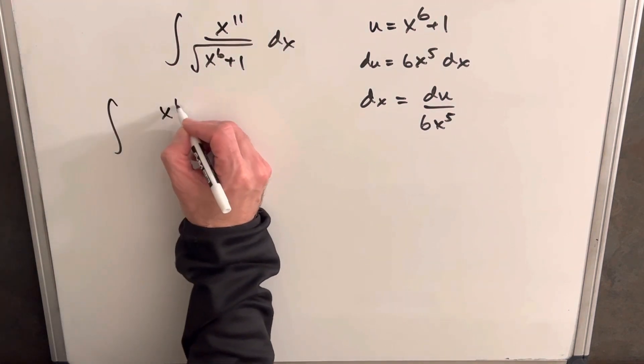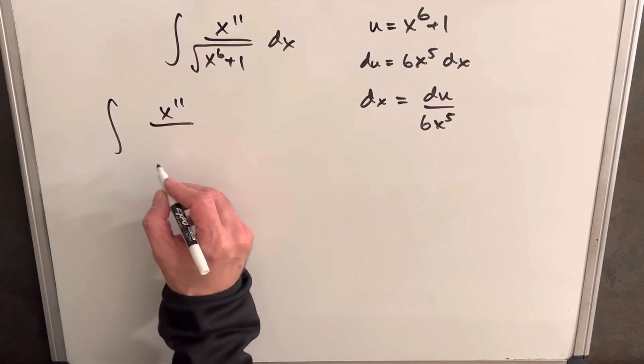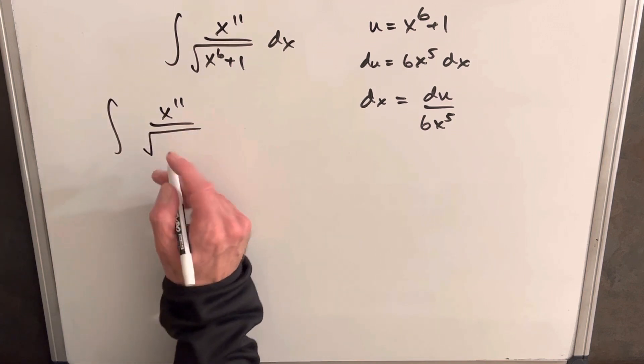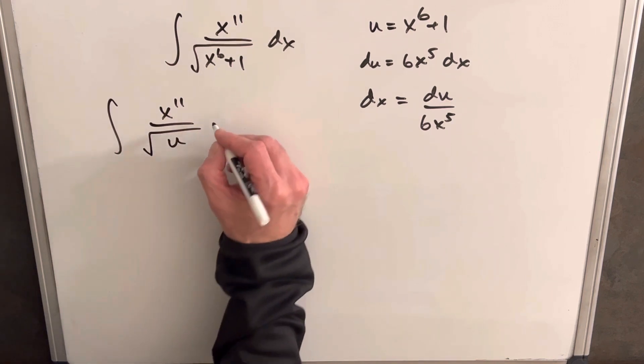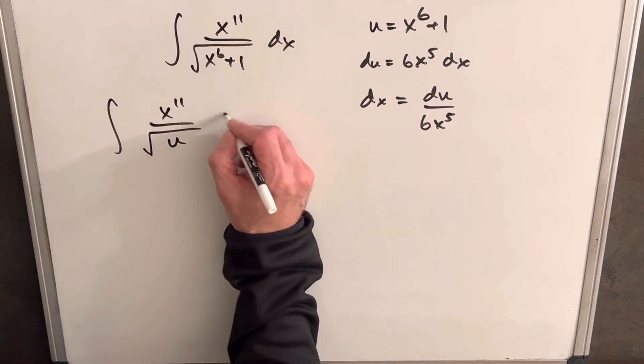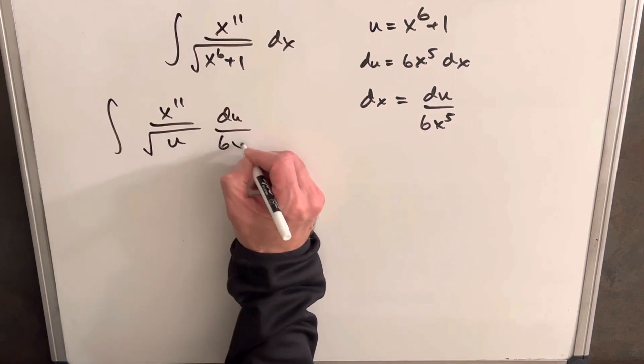So let's just make the substitution. We're going to keep our x to the 11th for the moment. Then in the denominator, this is going to be just our u, and then dx is going to be du over 6x to the 5th.